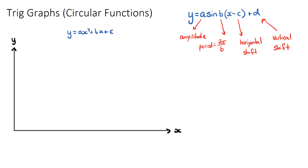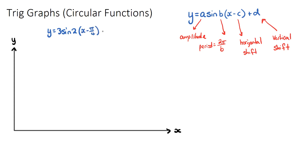So this is the general equation of a sine function. Now I'm going to do an example and as we do the example we'll draw it and talk about each of the four letters. A is the amplitude, b is to do with how skinny or wide the function is, c is if the function has been shifted horizontally, and d is the vertical shift. The example we're going to sketch is y equals 3 sine of 2 times x minus pi on four, plus four.